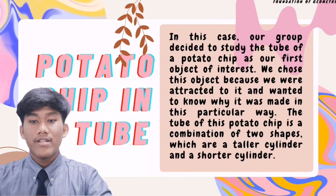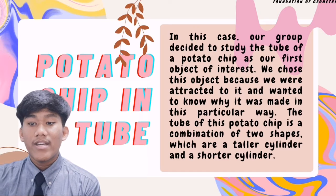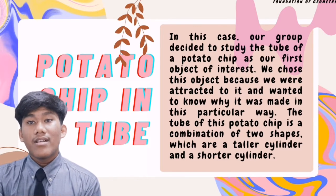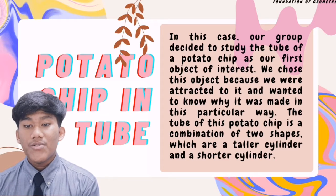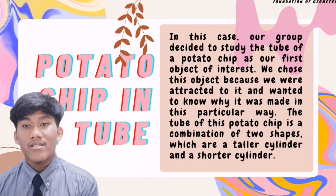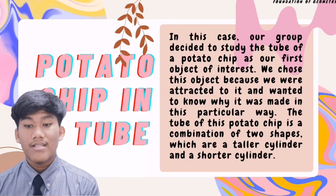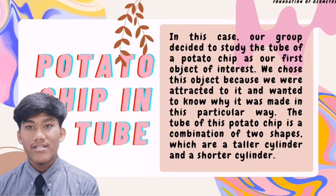Without further ado, let me start with our first case, which is a tube of potato chips. I will let you know the reason why we chose this case. Our group decided to study the tube of a potato chip as our first object of interest. We chose this object because we were attracted to it and wanted to know why it was made in this particular way. The tube of this potato chip is a combination of two shapes: a taller cylinder and a shorter cylinder.